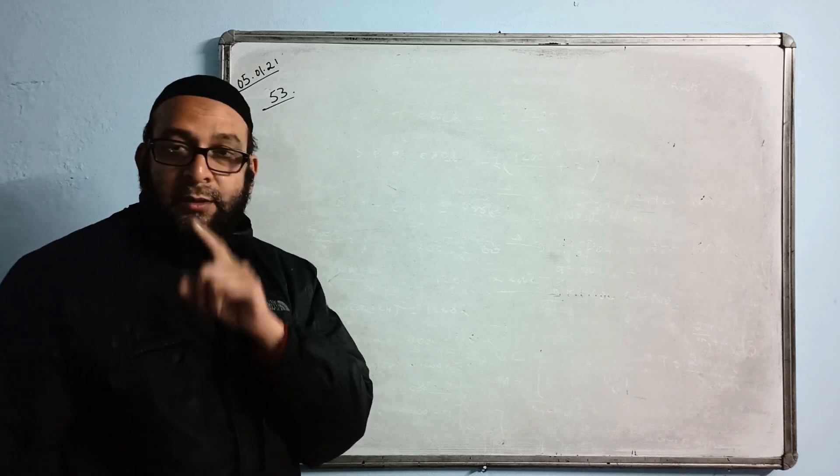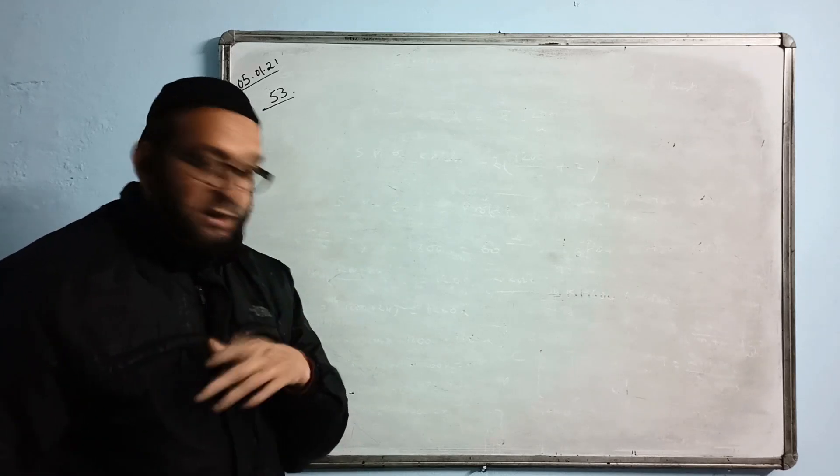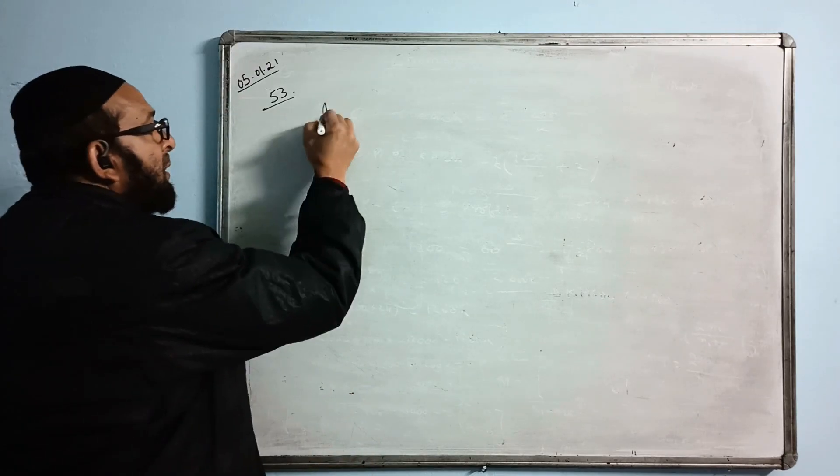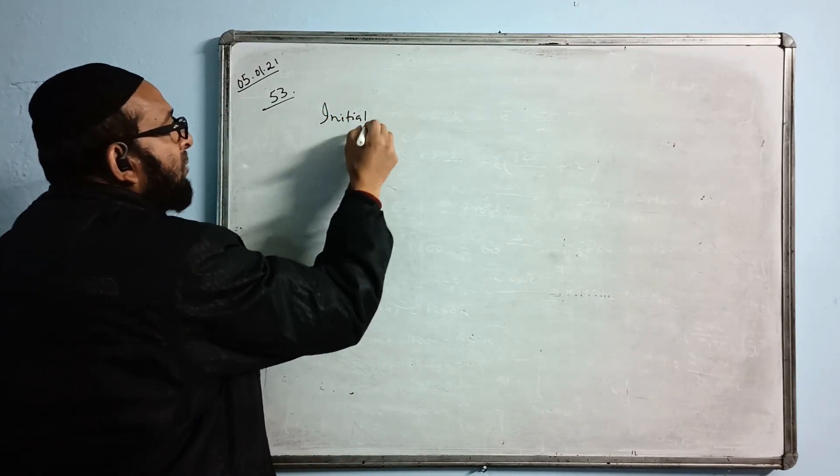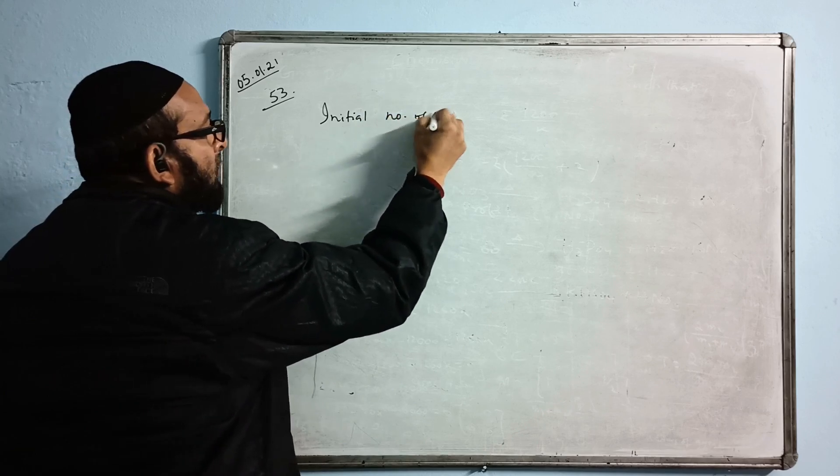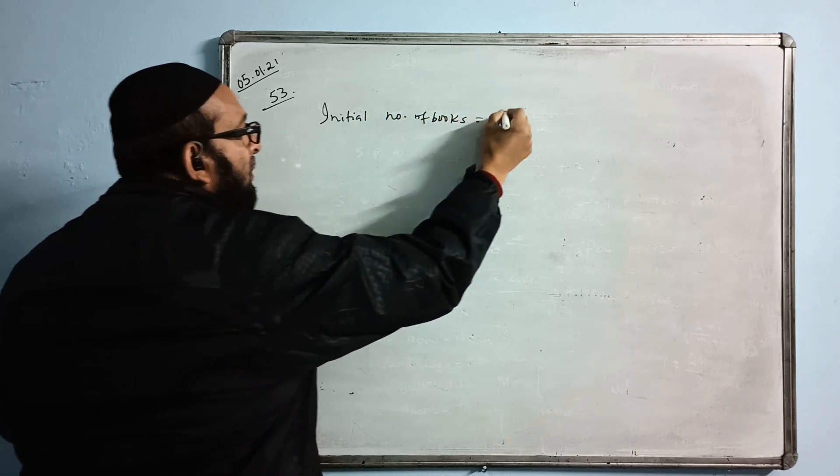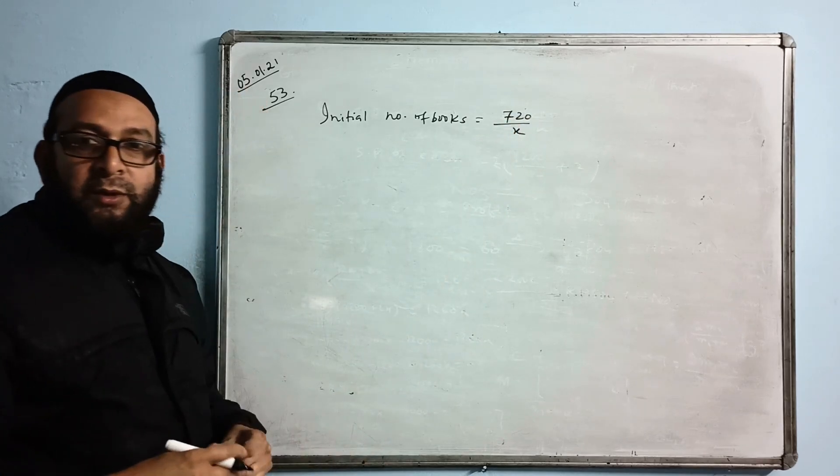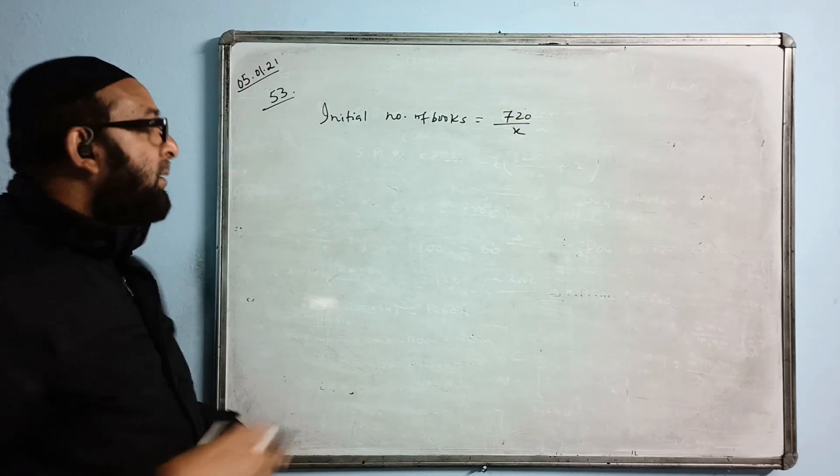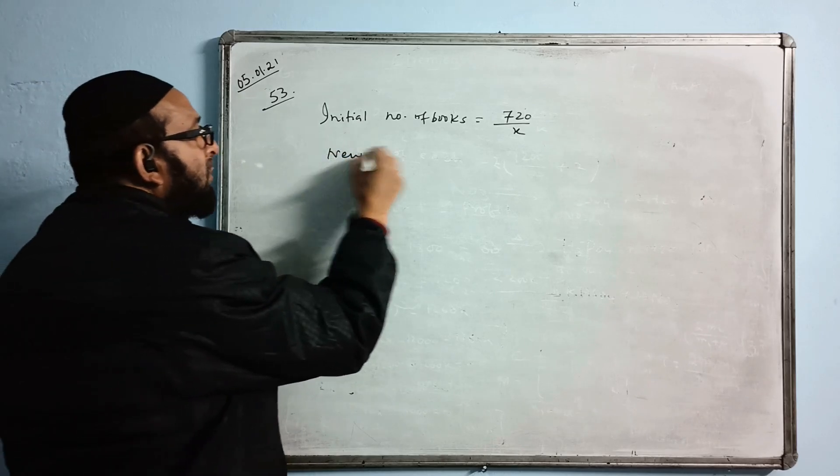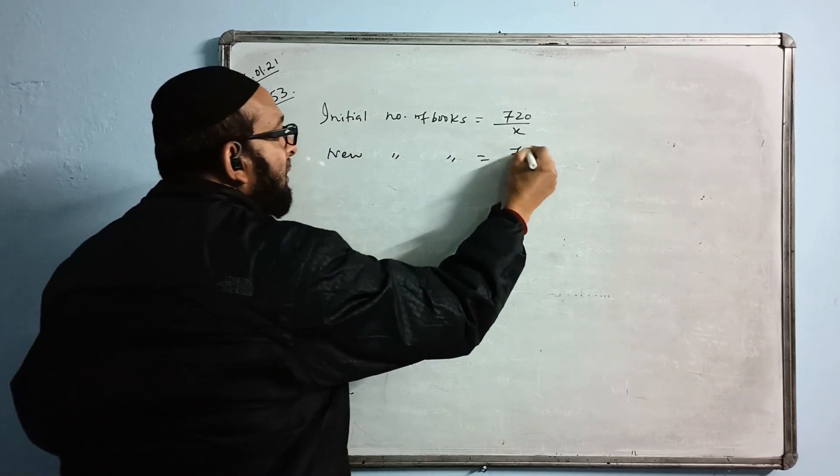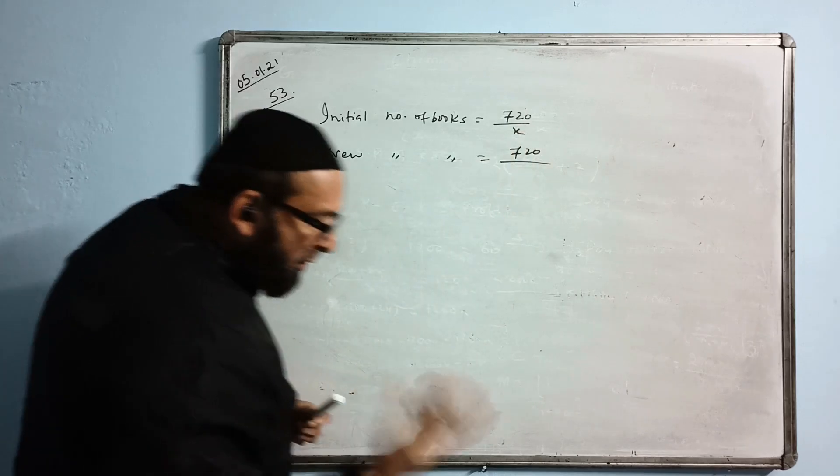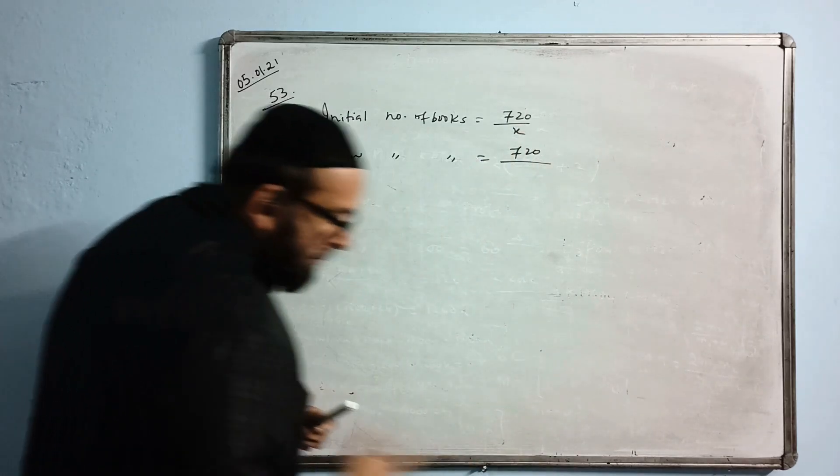Cost of one book is Rs. X and he is spending Rs. 720. Let us find the initial number of books. That will be 720 by X. Divide by the price of each, you get that many books in the beginning. Now let's write new number of books: 720 divided by the new price. What is the price? Is it more or less?